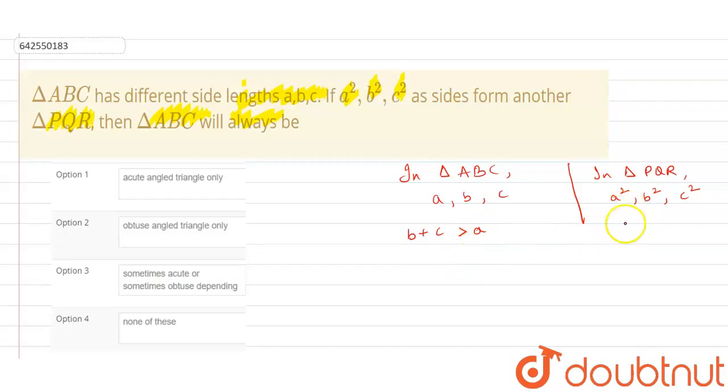Similarly, if we apply the same property here, it will become B square plus C square is greater than A square. So let's write that property. Sum of any two sides of a triangle is greater than the third side.